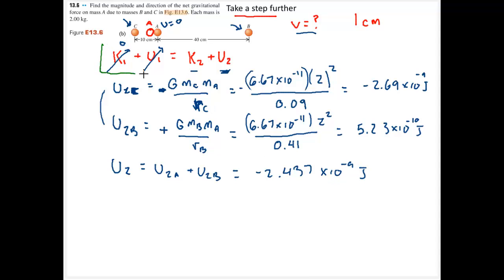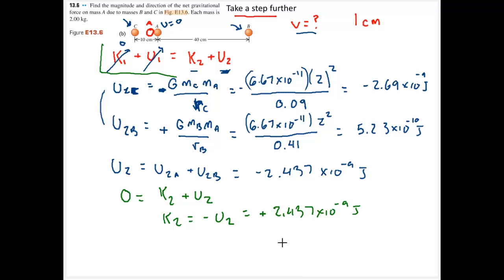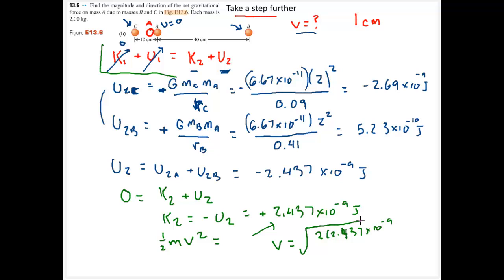Coming back to the energy expression: 0 equals K2 plus U2, so K2 equals negative U2, which is positive 2.437 times 10 to the negative 9 joules. Setting one-half times mass times velocity squared equal to that value, velocity equals the square root of 2 times 2.437 times 10 to the negative 9 divided by the mass of 2 kilograms. The result is a very small velocity: 6.98 times 10 to the negative 6 meters per second.